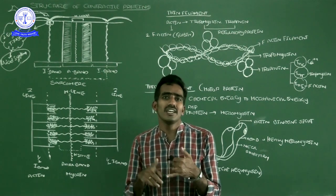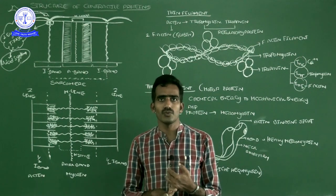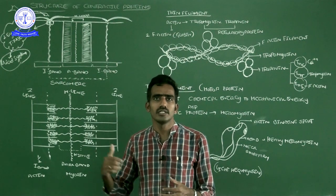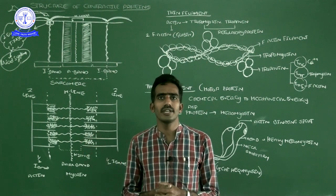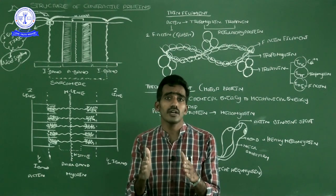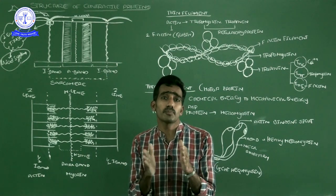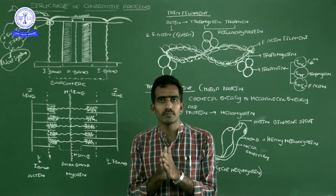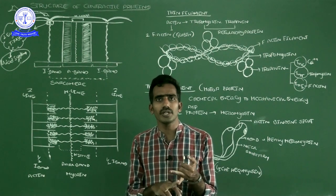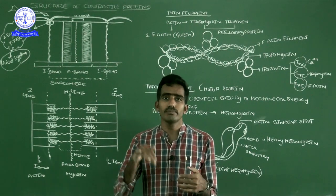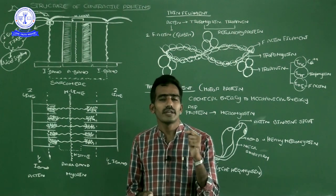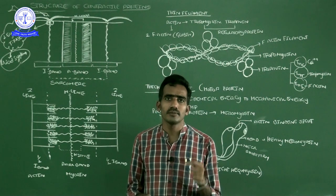In the muscular system, first we saw the skeletal muscle structure and its ultrastructure. The diagrammatic representation of the skeletal muscle — what structures are inside the ultrastructure? One more time I will revise it. During muscle contraction, muscle proteins are involved. Two important proteins: one is the actin protein, another one is the myosin protein. How these two proteins play an important role in muscle contraction — we want to know. This video is about the structural proteins of muscles.